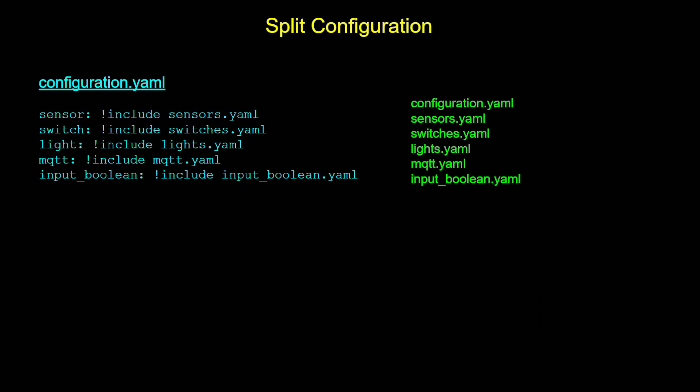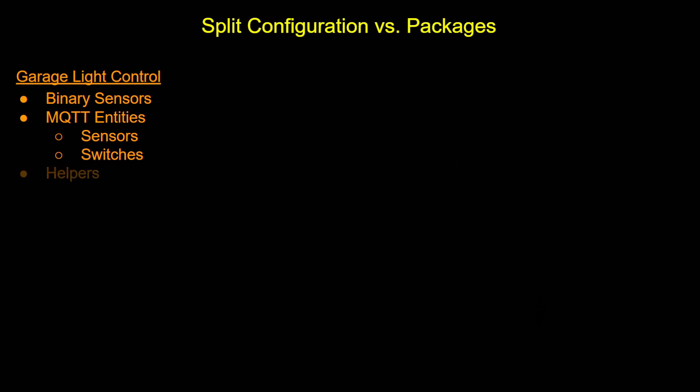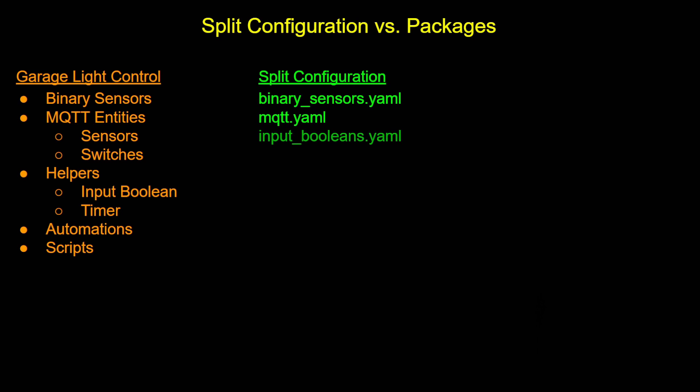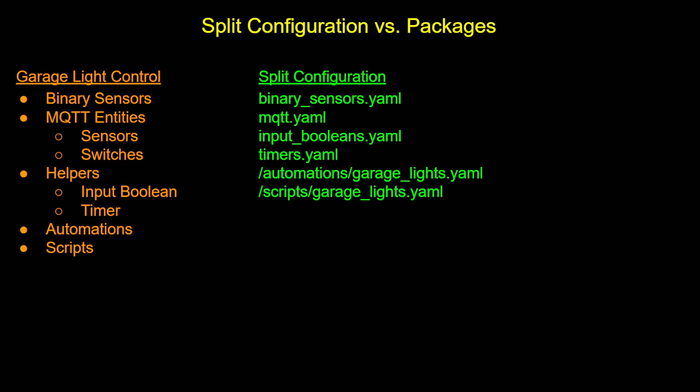But there is at least one problem with split configuration that packages can help solve. For example, if I take a look at my garage lights — my automated garage lights — it consists of a number of different types of integrations. I might have a few binary sensors, some manually defined MQTT entities, a couple of different types of helpers, some automations and some scripts. So if I want to go back and make changes, I might actually have to open up five or six different YAML files just to work on my garage lights.